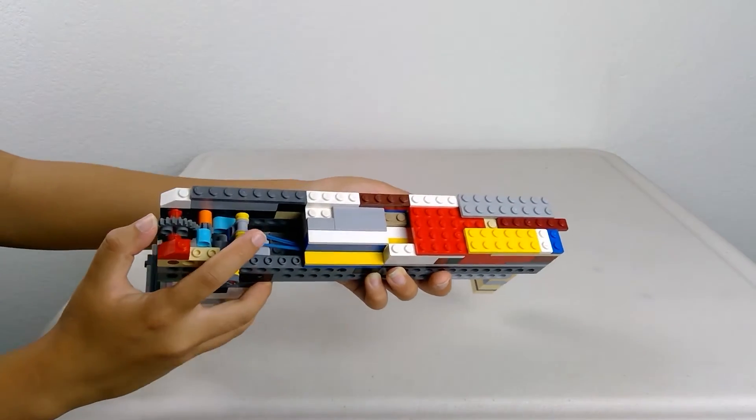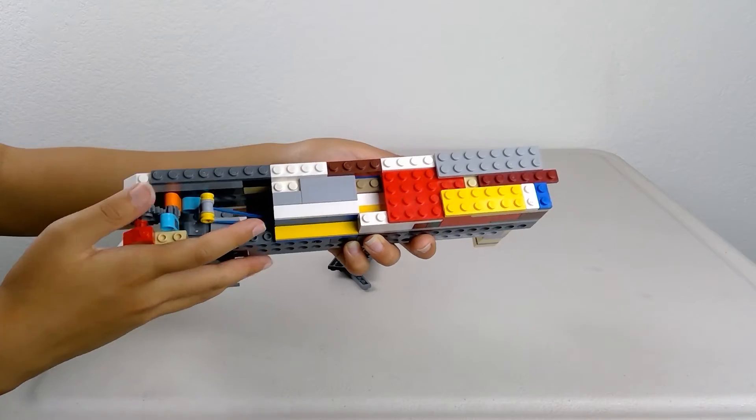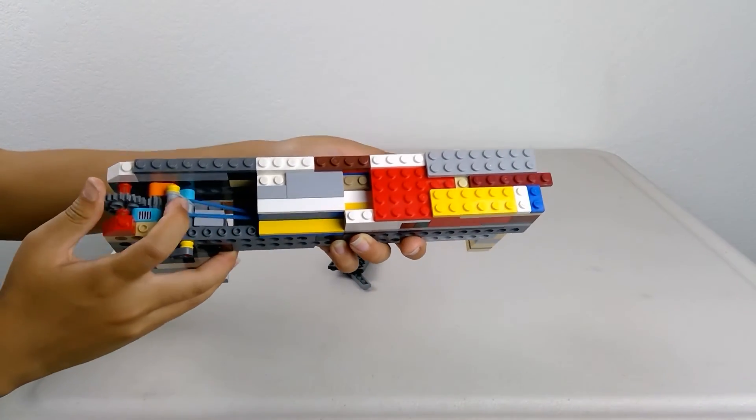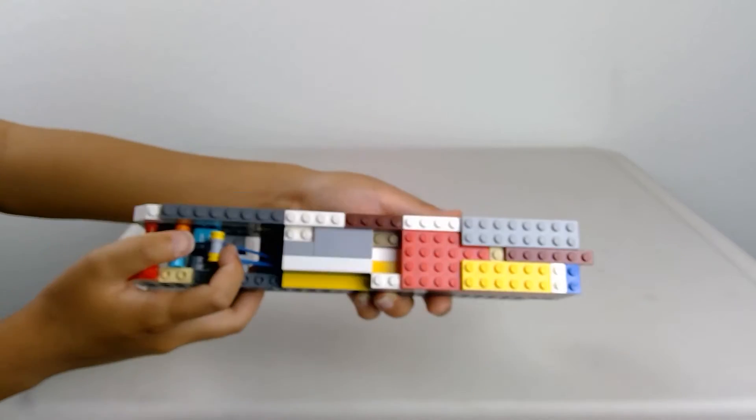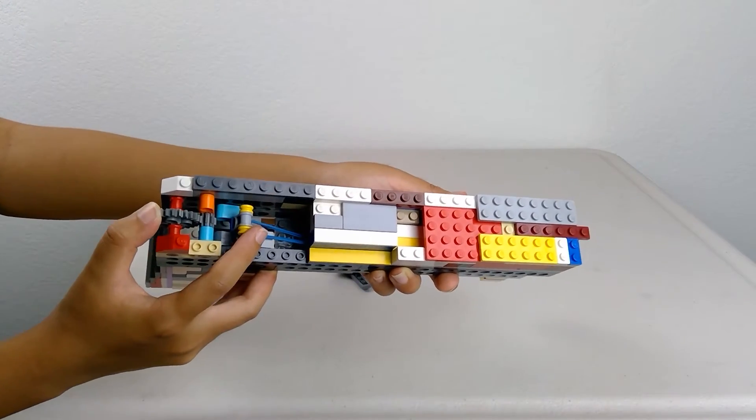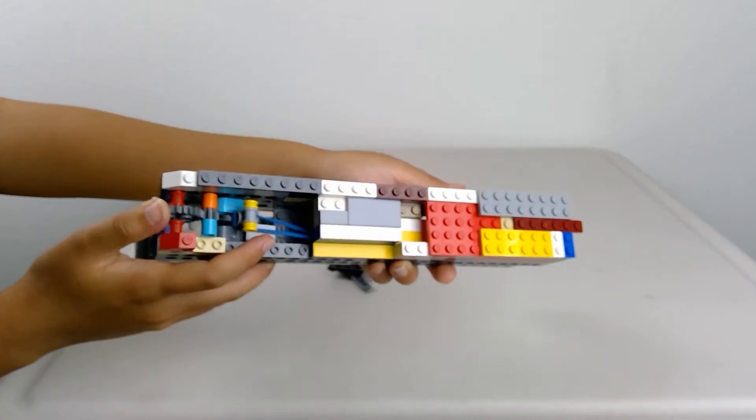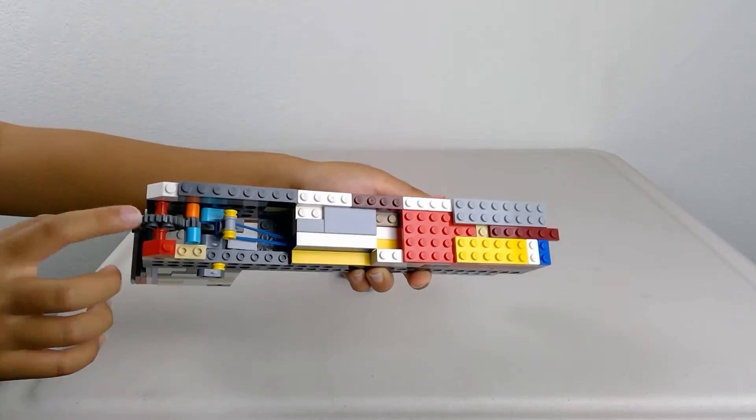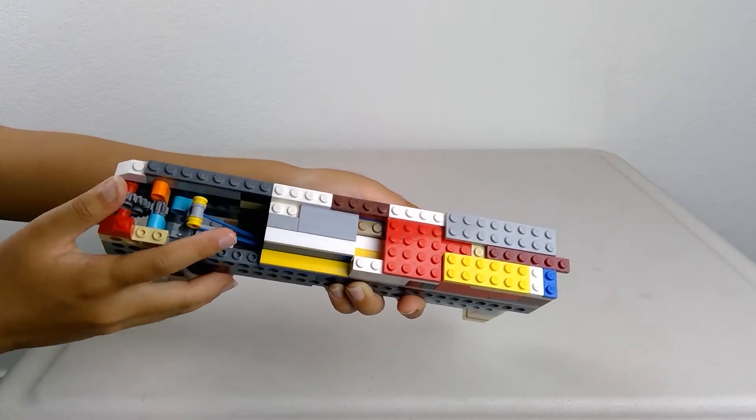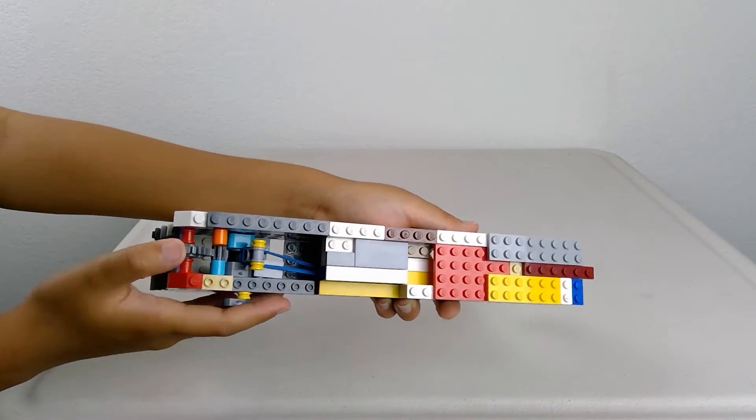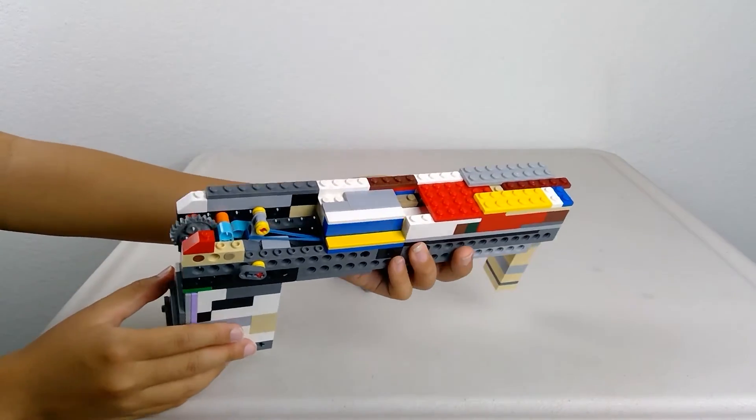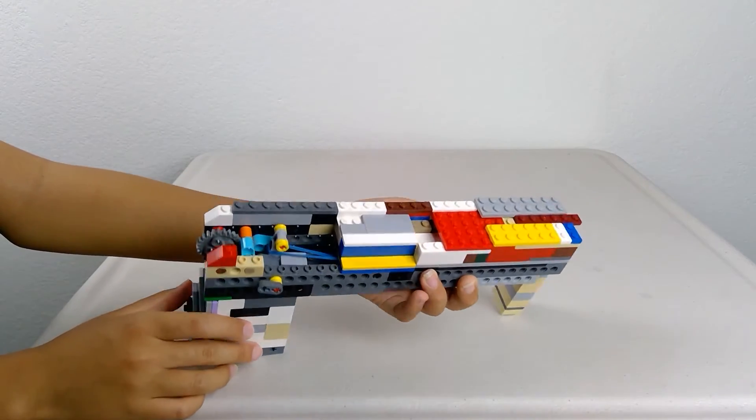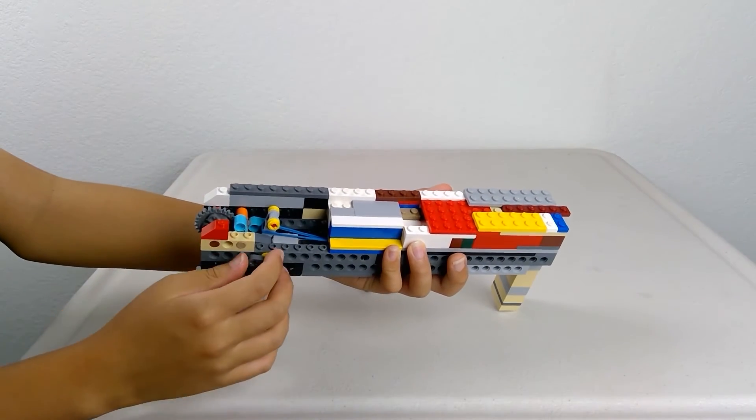The first time I pushed this, it shot the first rubber band. The second time I pushed it, it shot the second rubber band. After I shoot the first rubber band, it chambers the second rubber band. And then when I push this again, it shoots the second rubber band and loads the third rubber band. When I shoot the third rubber band, it loads the fourth one. And then when I shoot the fourth one, the gear is empty and I have to reload it.